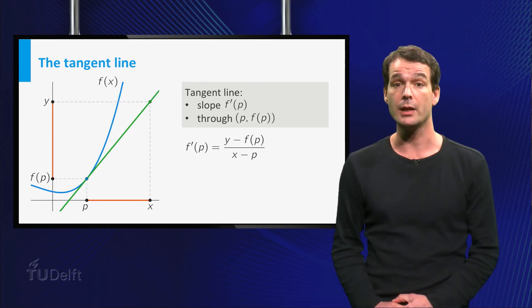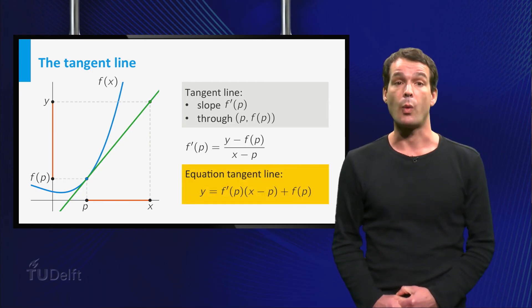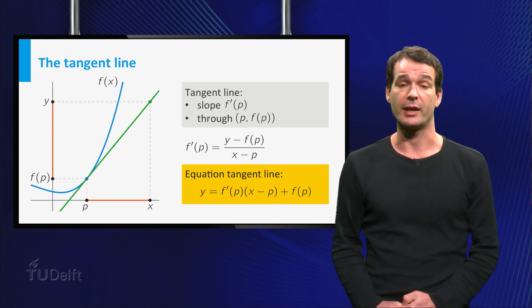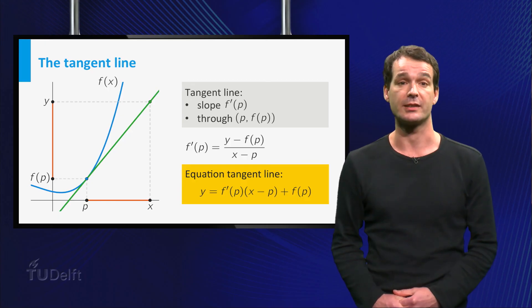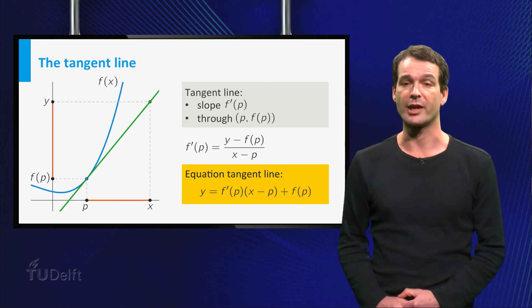We can now solve for y. Then we find y is equal to f prime of p times x minus p plus f of p. And this is the equation of the tangent line. Ok, let's practice with this.